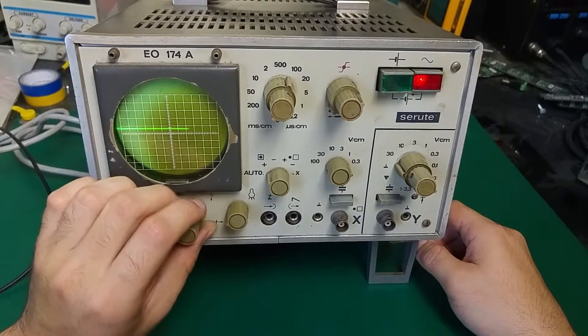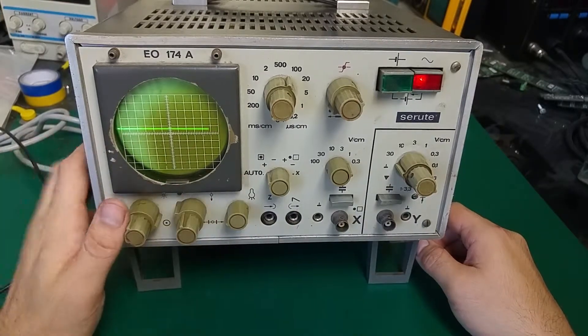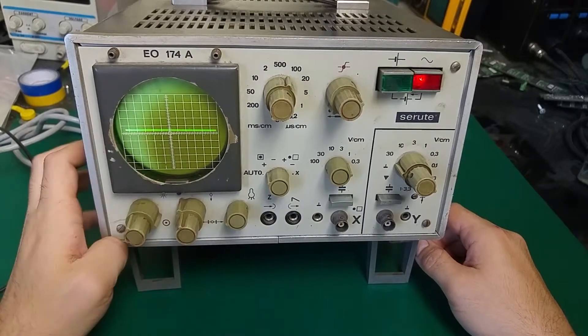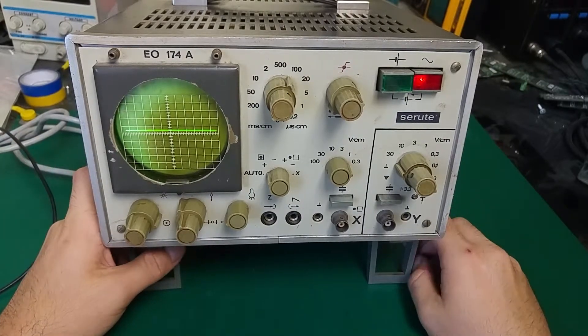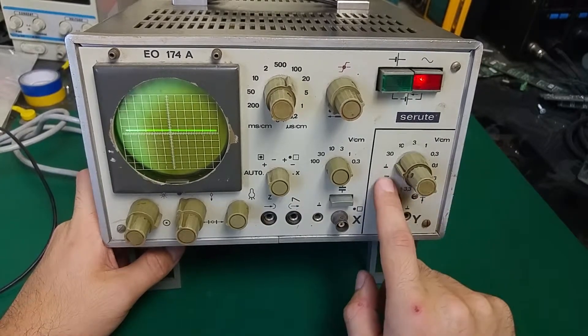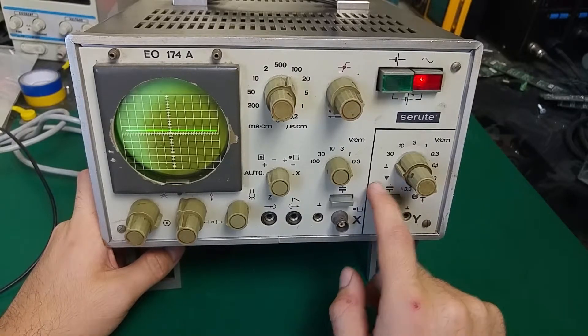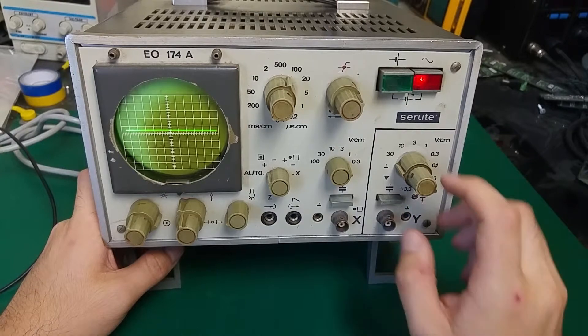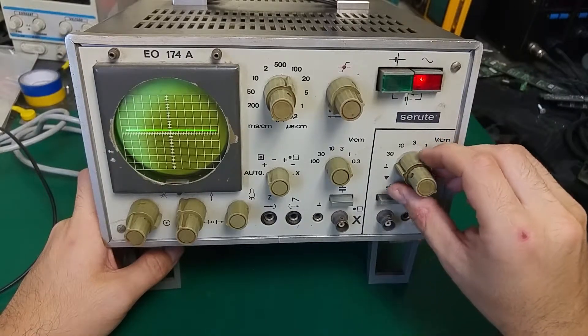and the horizontal. First of all, let's try to grab the built-in signal generator. The test point is over there, that triangle. That one is, I'm pretty sure, just a grounding for our input.